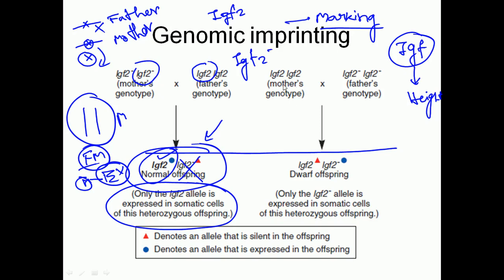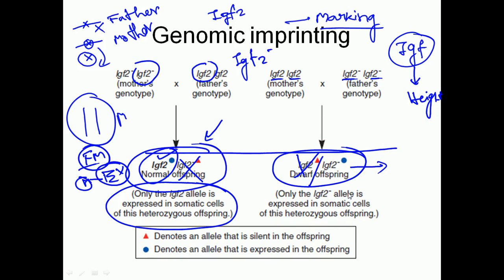Similarly, say the mother's genotype is IGF-2 / IGF-2 and father is IGF-2 minus / IGF-2 minus. We get both of them — IGF-2 and IGF-2 minus. Now the imprinting situation again: the gene that I got from the father I should express, but from the mother I should not express. The gene I get from the mother is IGF-2 (normal copy), but imprinting says we should not express that. From father I get IGF-2 minus; imprinting says I should express that. So I will express IGF-2 minus instead of IGF-2, so height will be dwarf.